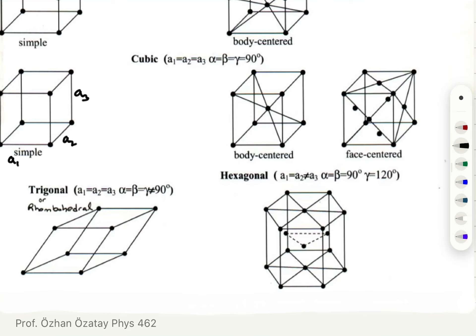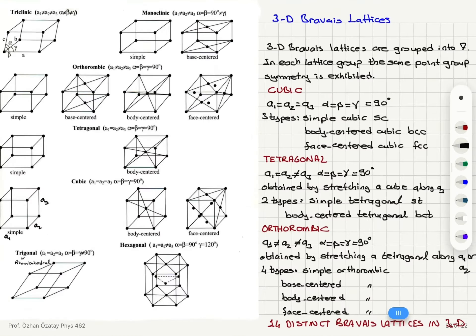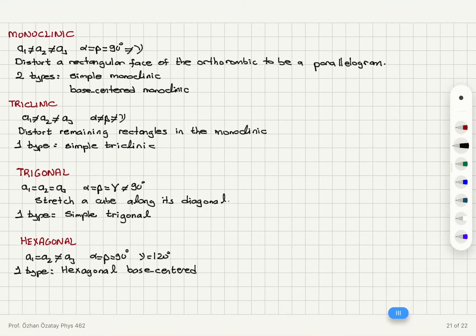Trigonal is also called rhombohedral — they are the same thing. A1, a2, a3 are equal; alpha, beta, gamma are equal but not equal to 90 degrees. You can see it is obtained by stretching a cube along its diagonal.